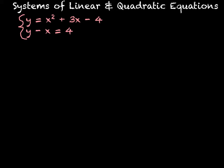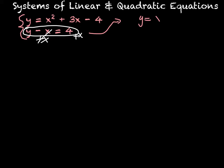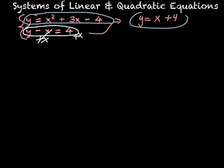Remember, the first thing that's sometimes easy to do is get everything set equal to y, and then we set everything equal to each other. So in the second equation here, I'm going to add the x over to the other side, giving me a second equation of y equals x plus 4. So then I'm just going to set everything equal to each other, because I have y equals x squared plus 3x minus 4, and y equals x plus 4.